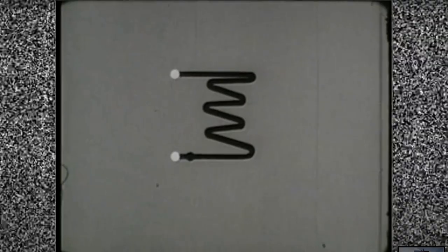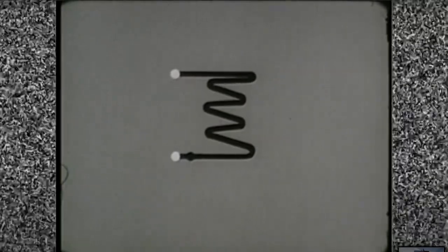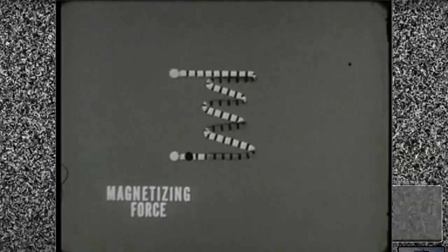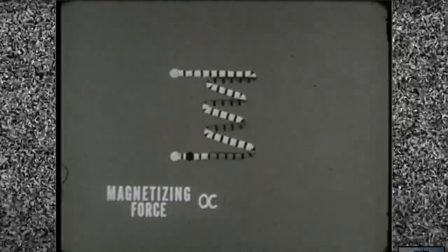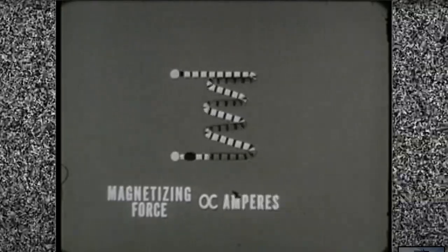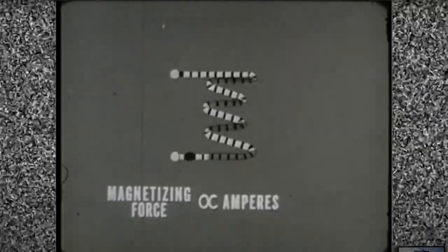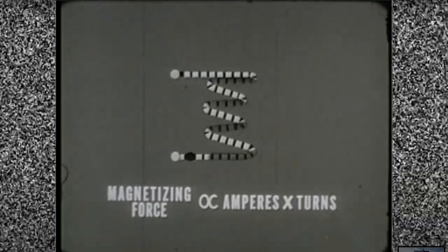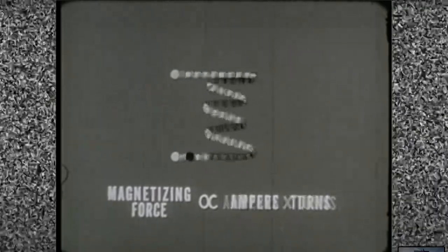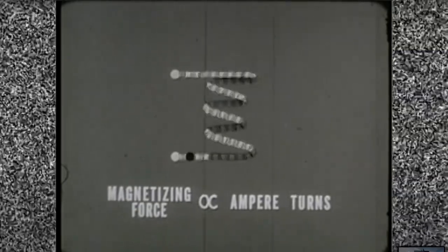Any winding around the core obeys the laws of electromagnetism. The magnetizing force it exerts is proportional to the amount of current flowing through it, measured in amperes, times the number of turns in the coil. Or, as it is usually expressed, the ampere turns.